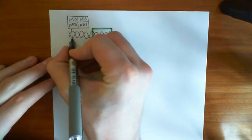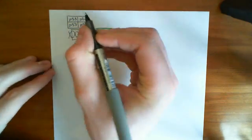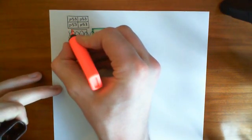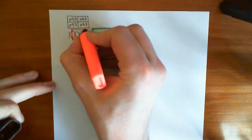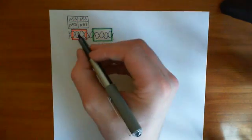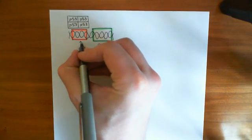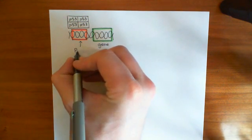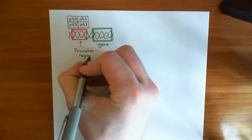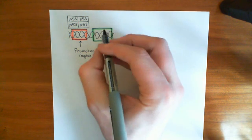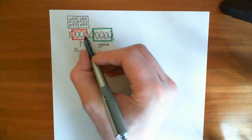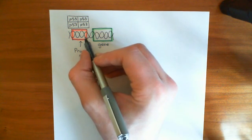Now, the way in which the promoter region controls how much of the gene product of this gene you make is that it controls how likely the RNA polymerase enzyme is to come and bind to it and then to begin the transcription of the gene. So in order to get the gene expressed, in order to actually make the gene product that the gene codes for, you need RNA polymerase to come along and produce an mRNA strand which is complementary to the coding strand of the gene. In order for that to happen, RNA polymerase has to bind slightly upstream of the gene, basically, and it binds to this promoter region.